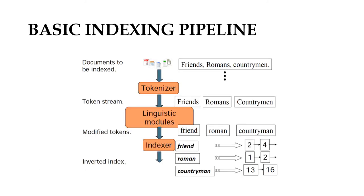Let us look at the basic indexing pipeline. We have a document that contains the input: friends, Romans, and countrymen. This input is passed on to the tokenizer. The tokenizer will split the input into small individual units called tokens. This splitting is done by removing all punctuation marks such as comma, semicolon, hyphenation, apostrophe, etc. So from the input statement, the tokens friends, Romans, and countrymen are fetched.